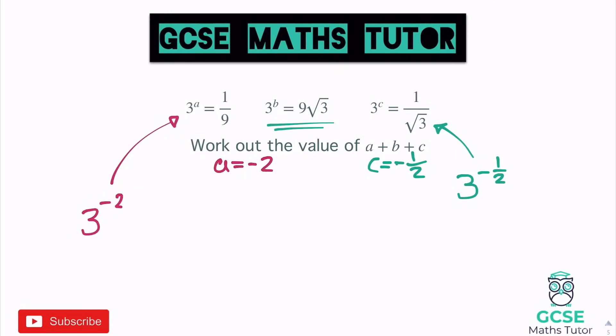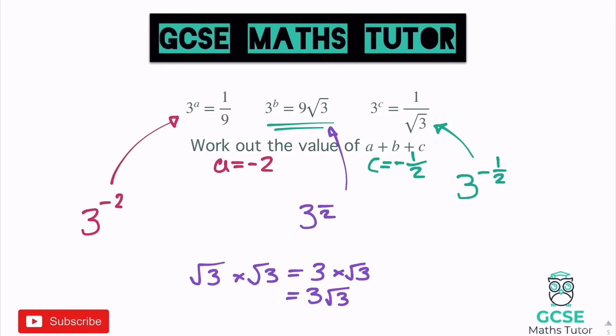Now for b, which is the most difficult. 3 to the power of b equals 9 root 3. There's no 'one over' and no minus, but there is a root, so it will be a fraction with 2 on the bottom. We need to find the numerator. Starting from root 3 (power of 1), multiply by root 3 each time: root 3 squared is 3 (power 2), times root 3 is 3 root 3 (power 3), times root 3 is 3 root 9 equals 9 (power 4).